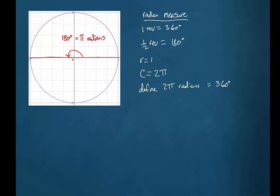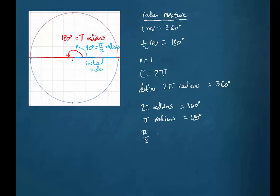If I again start at the positive part of the x-axis for my initial side and form that angle by turning one quarter of a revolution, or in other words 90 degrees, that is just going to be half of the π radian measure, or in other words π over 2 radians. So: 2π radians is the same as 360 degrees, π radians is the same as 180 degrees, and π over 2 radians is the same as 90 degrees.